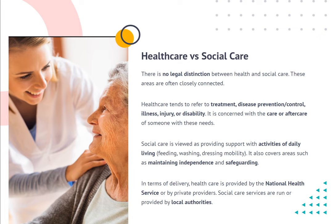Social care is viewed as providing support with activities of daily living — feeding, washing, dressing, and mobility. It also covers areas such as maintaining independence and safeguarding. In terms of delivery, healthcare is provided by the National Health Service or by private providers, while social care services are run or provided by local authorities.